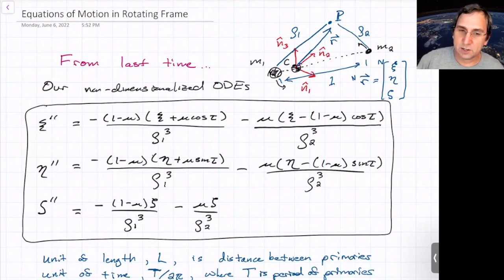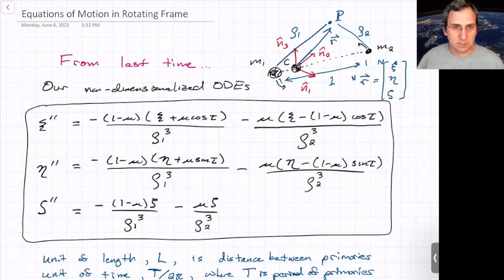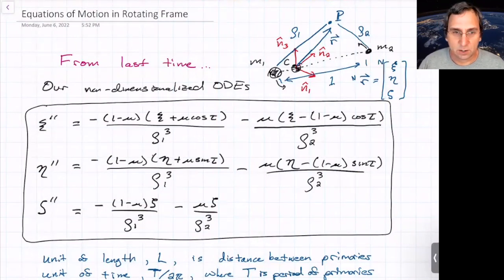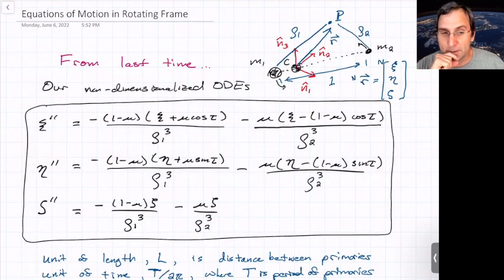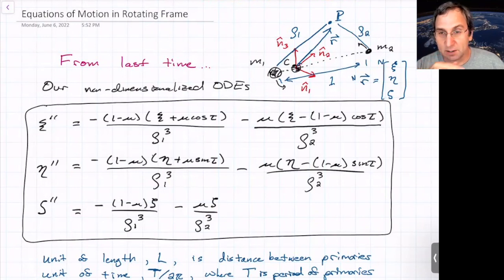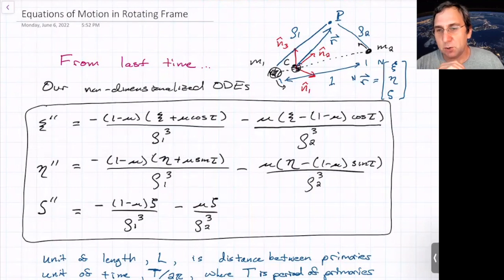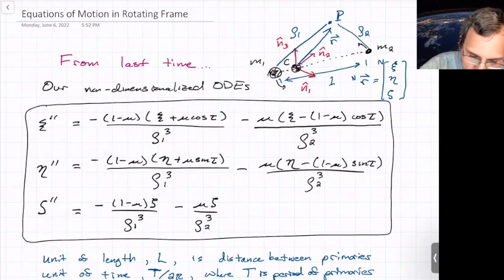It's always easier to non-dimensionalize as much as you can. So now we've got these non-dimensional ODEs, where chi is the non-dimensional x direction in the inertial frame, eta is the non-dimensional y, and zeta is the non-dimensional z. These are the equations of motion — second order in the inertial frame. This isn't the usual way that people view and solve, or generally deal with, the three-body problem. They usually look in a rotating frame.